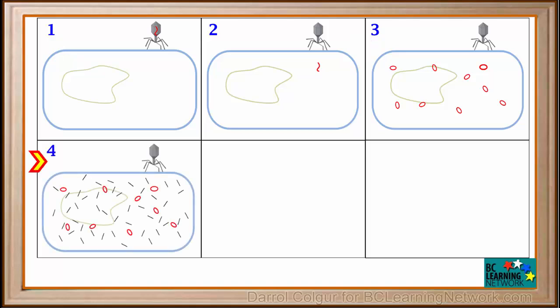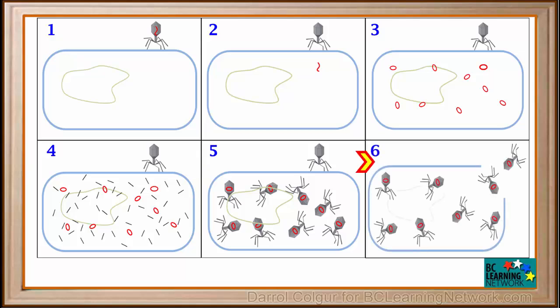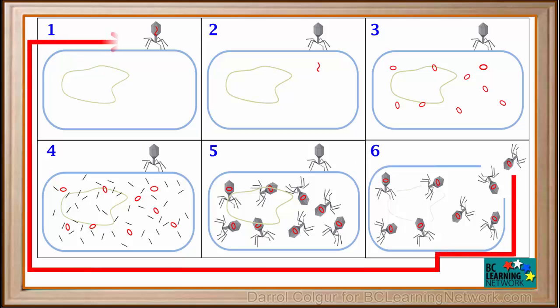These then use the resources of the cell to make proteins needed to build new copies of the virus. The proteins are assembled into many copies of the original virus. The cell wall ruptures and the new viruses are released. Each released virus attaches to another cell, and the process repeats itself.